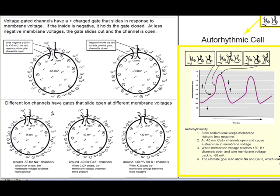Sodium channels usually open with just a small change in voltage, typically from minus 70 up to about minus 55. Sodium channels want to open to let sodium come in and cause a big change in voltage. When the channel opens, a bunch of sodium runs into the cell following its diffusion gradient. Sodium is positively charged, so it makes the voltage of the cell even more positive.